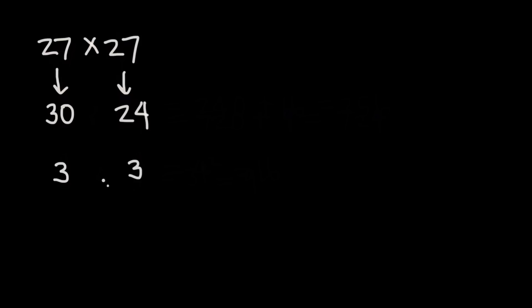And that difference is 3 as well. The differences will always be the same because that's the rule that we're using. We're keeping these changes the same, so up by 3 and down by 3. Then 30 times 24 becomes our new multiplication problem.